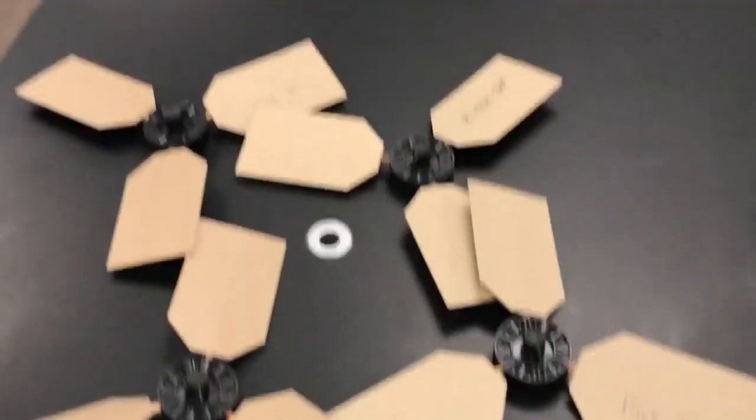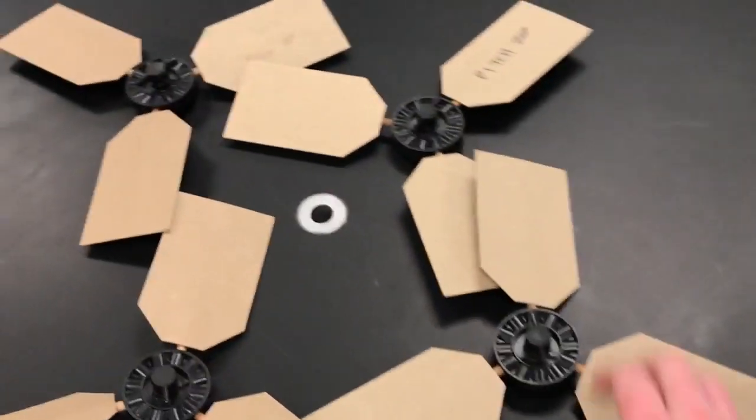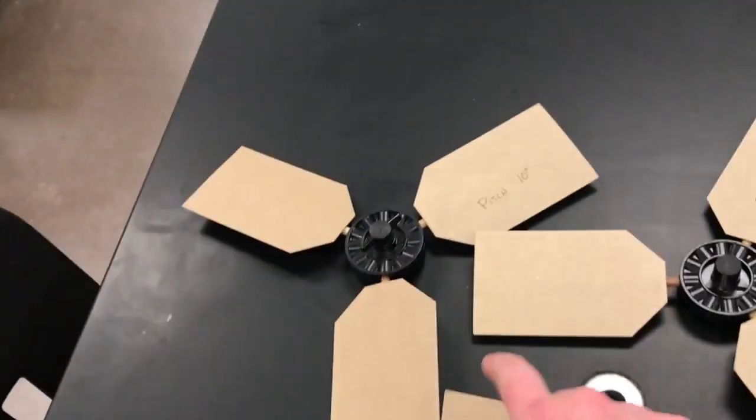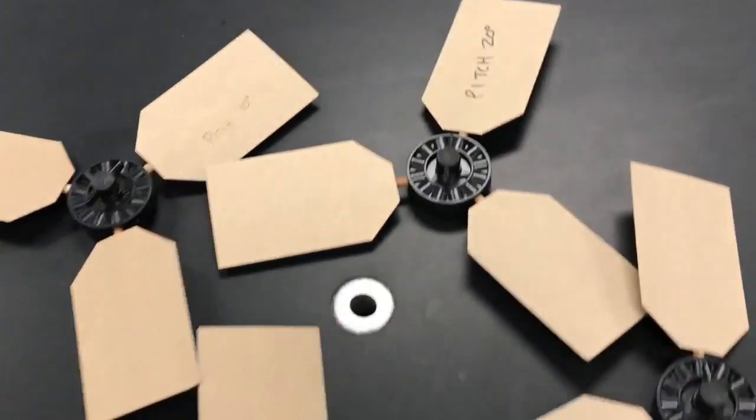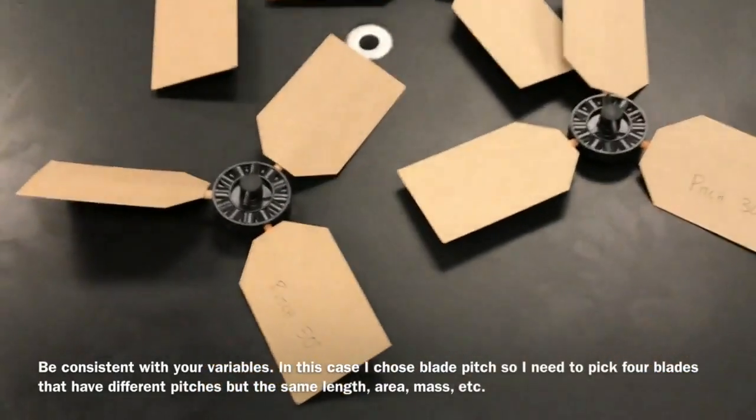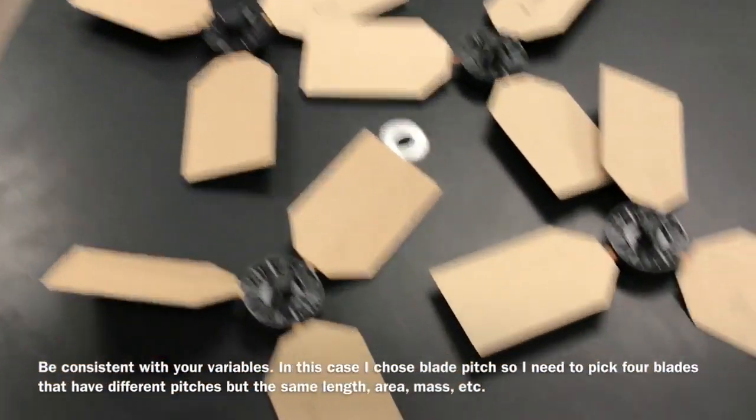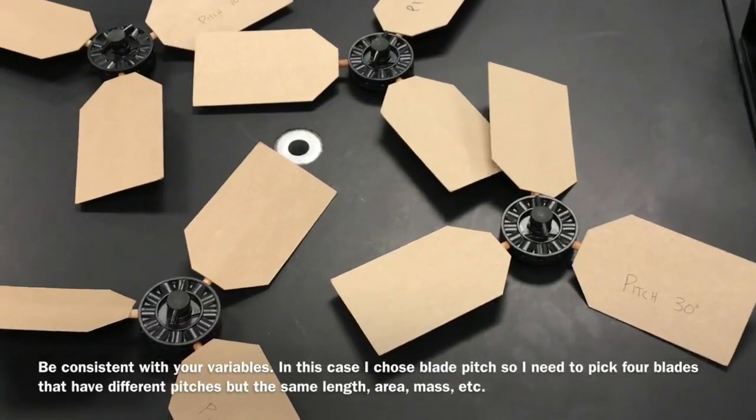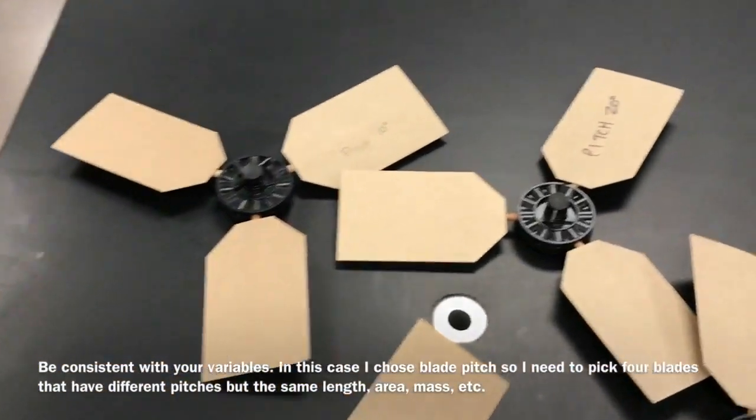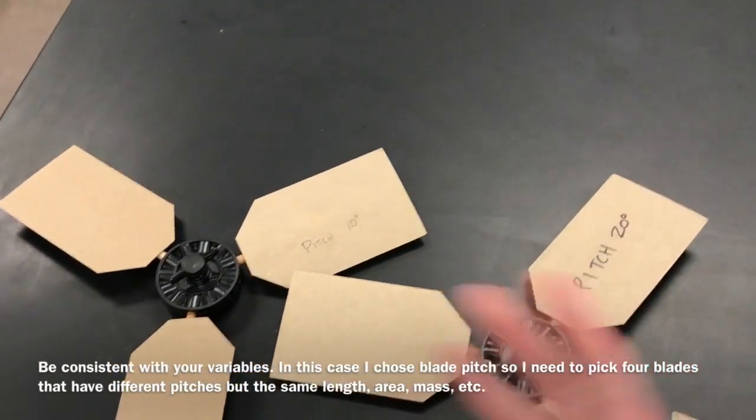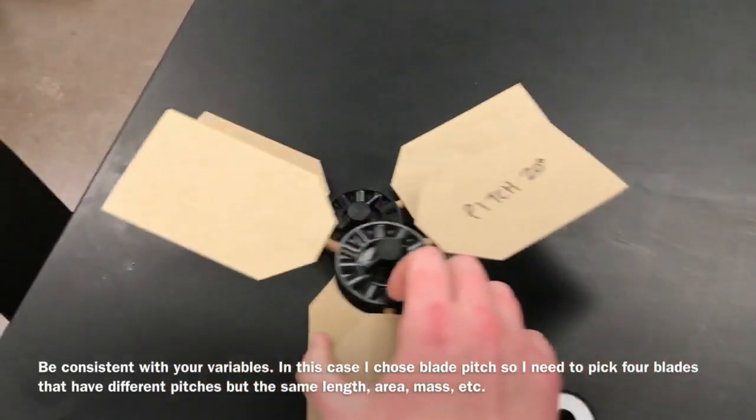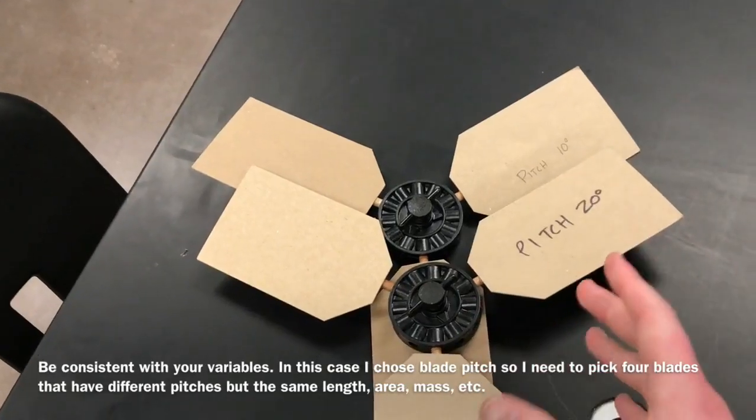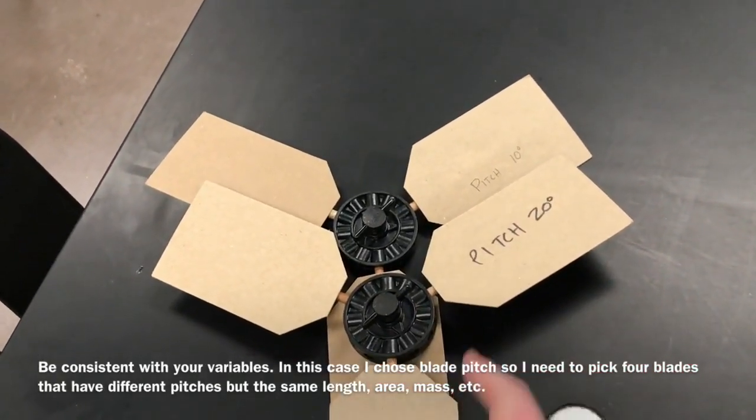So for example, what I'm going to do is grab four blade types that only one variable is changed in. So I chose blade pitch for my first experiment here. So I grabbed four blades that have different pitches. So pitch 30, pitch 50, I've got a pitch of 10 degrees, and a pitch of 20 degrees. So the one thing with these variables, I picked pitch. So I have four blades with four different pitches. You want to be consistent with everything else. So you could choose one that has a pitch of 10 degrees and a pitch of 20 degrees. But if the blade length is different for the 20 degree one, that's not a good experiment because you have too many variables. So I want to make sure that the area, the weight, and the length of all of these are the same. And the only variable that's changed is the pitch.